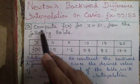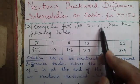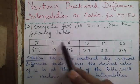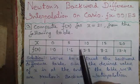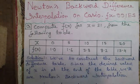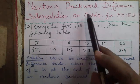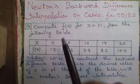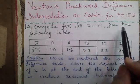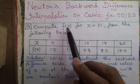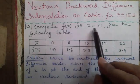Our question is: compute f(x) for x equal to 21 from the following table. Before starting, some questions that might come to your mind — first: what is Newton's backward difference formula? It is a formula used to find f(x) for given values of x.